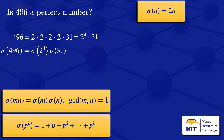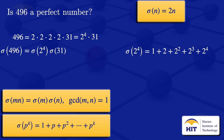Now I look at sigma(2^4). Since 2 is a prime number, we can use the formula, replacing p with 2 and k with 4. So sigma(2^4) equals 1 plus 2 plus 2 squared plus 2 cubed plus 2 to the power 4, which gives us a result of 31.